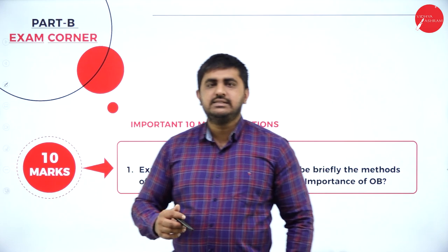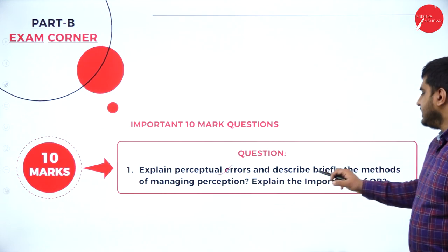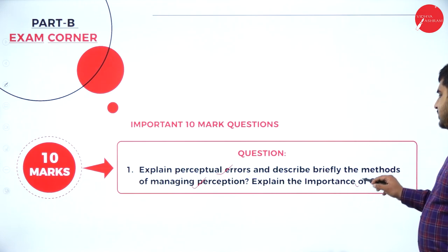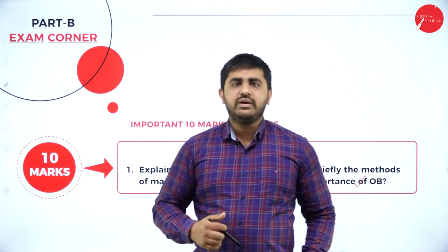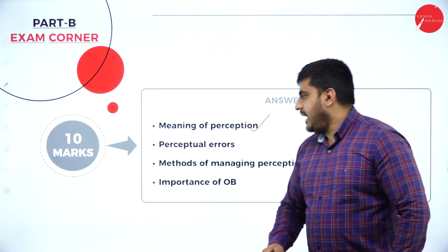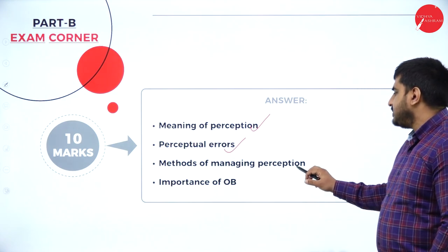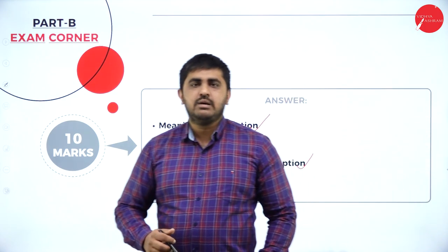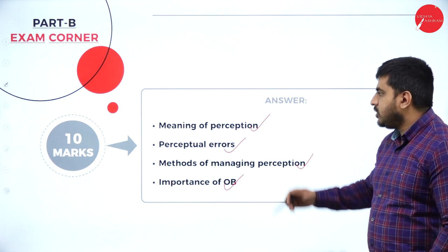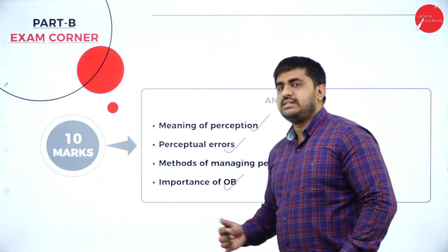Now we get into the 10-mark section, Part B. First question: explain perceptual errors and describe briefly the methods of managing perception. Also, explain the importance of OB — this can be asked for 10 as well as 15 marks. Give the meaning of perception and explain the perceptual errors as given in the notes, then explain methods of managing perception — how you can manage with the errors that come out of perception. Make sure you write a minimum of two sides of your booklet.